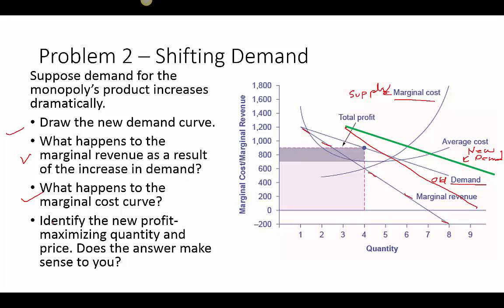Now we identify the new profit-maximizing quantity and price. The new marginal revenue equals marginal cost at a higher point than before, so the quantity increases. The original price was about $900, and now the new price — reading up from the new quantity to the demand curve — is a little over $1,000, maybe about $1,100.